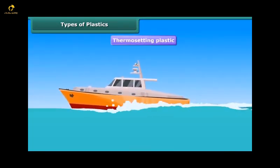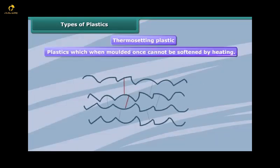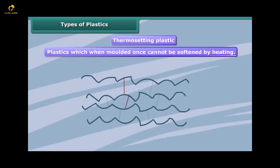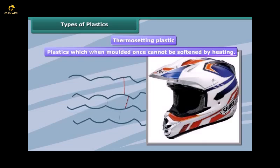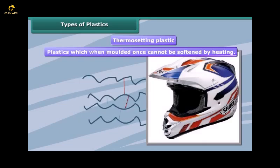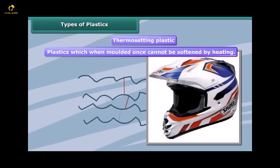Thermosetting plastics have a cross-linked arrangement of their constituent units. These can melt and take shape once only. After they have solidified they stay solid. On subsequent heating they do not become soft and hence do not change their shape. Therefore, these cannot be recycled.